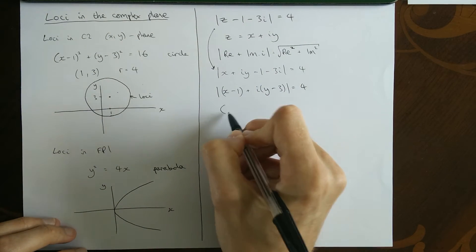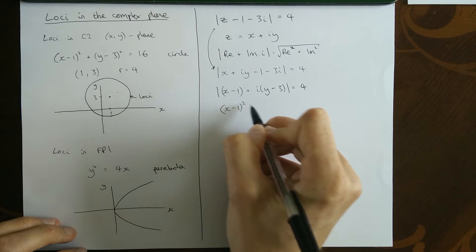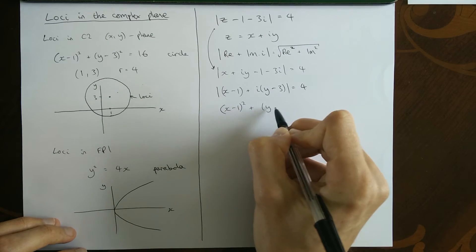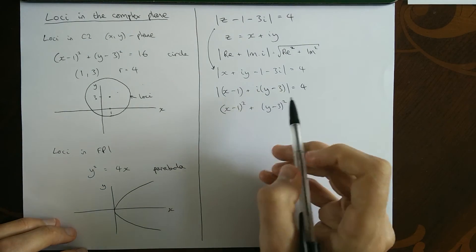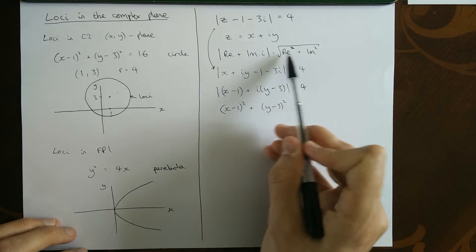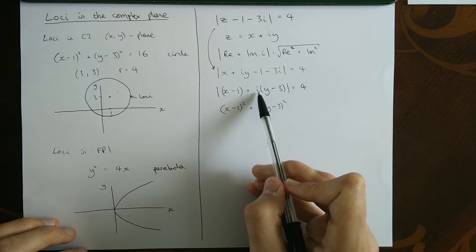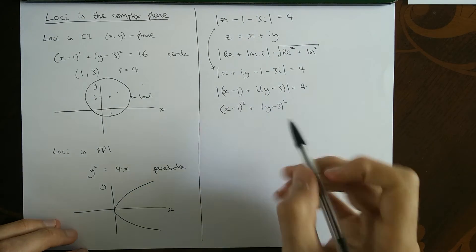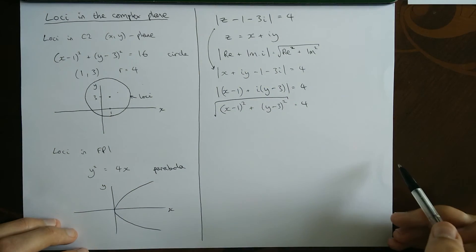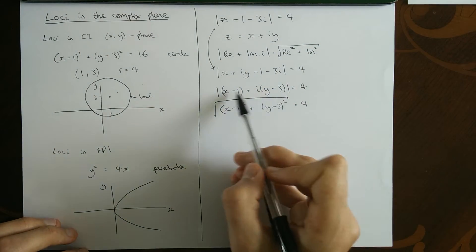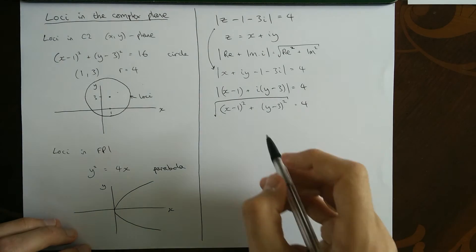To work out the modulus now, we take the real bit and we square it. And we take the imaginary bit and we square it. We're not squaring the i because we're doing the real part and the imaginary part squared according to this formula. We're not squaring the i. We're squaring the coefficient of the imaginary part. We then square root that and put it equal to four. So we're just following this formula up here. Something we've done before but now we're doing it with two parts and not just one number.